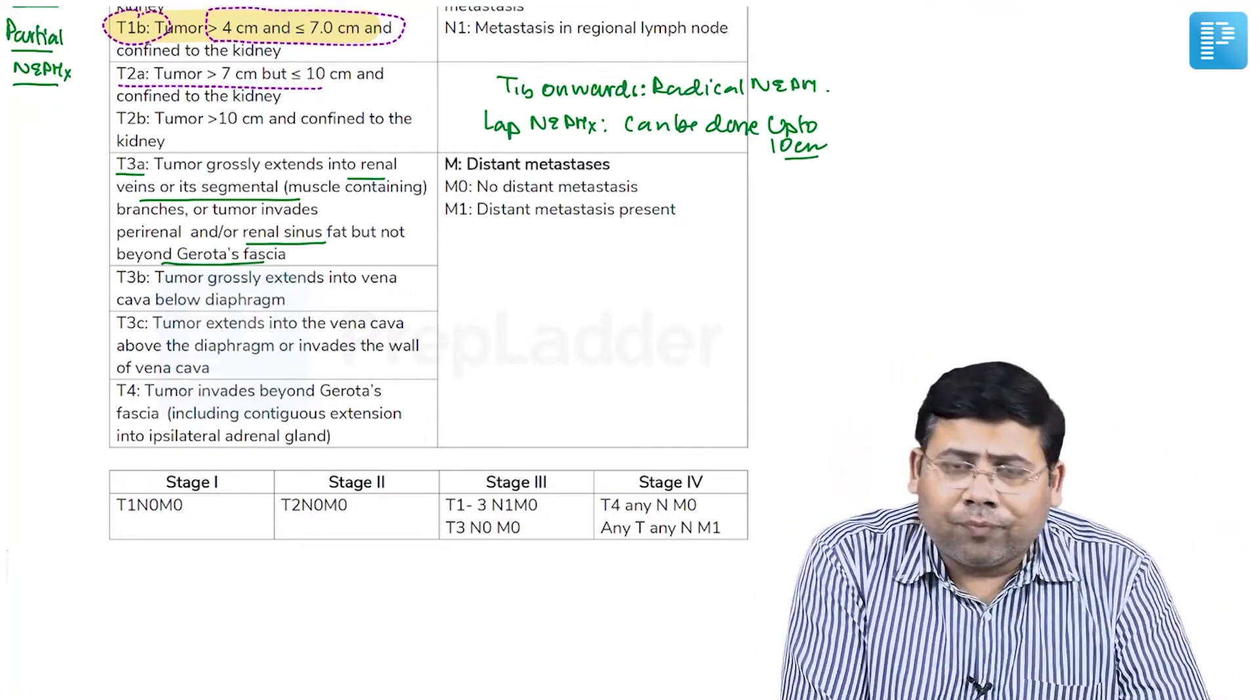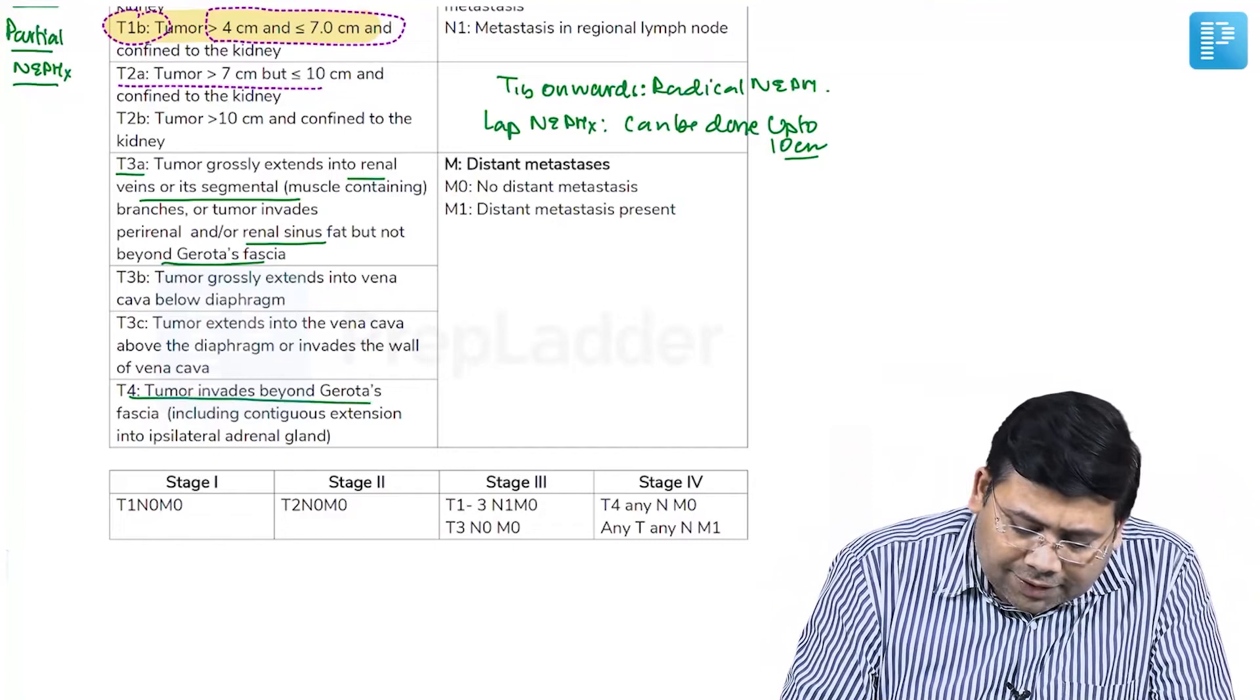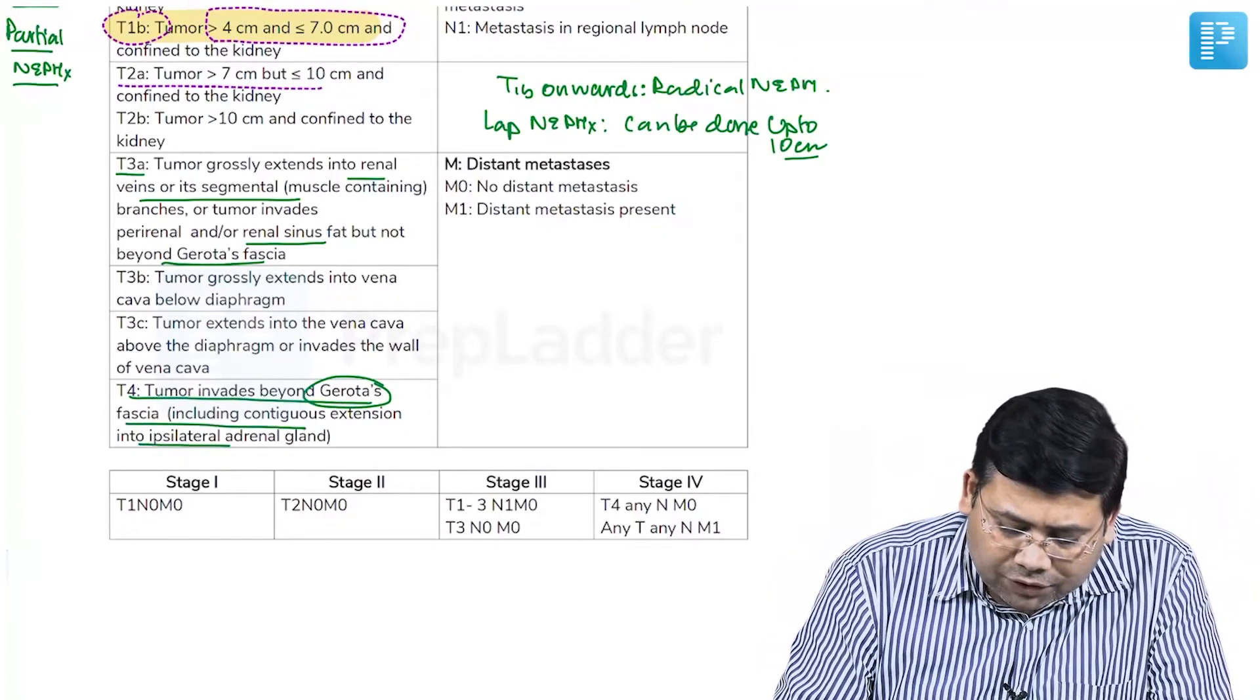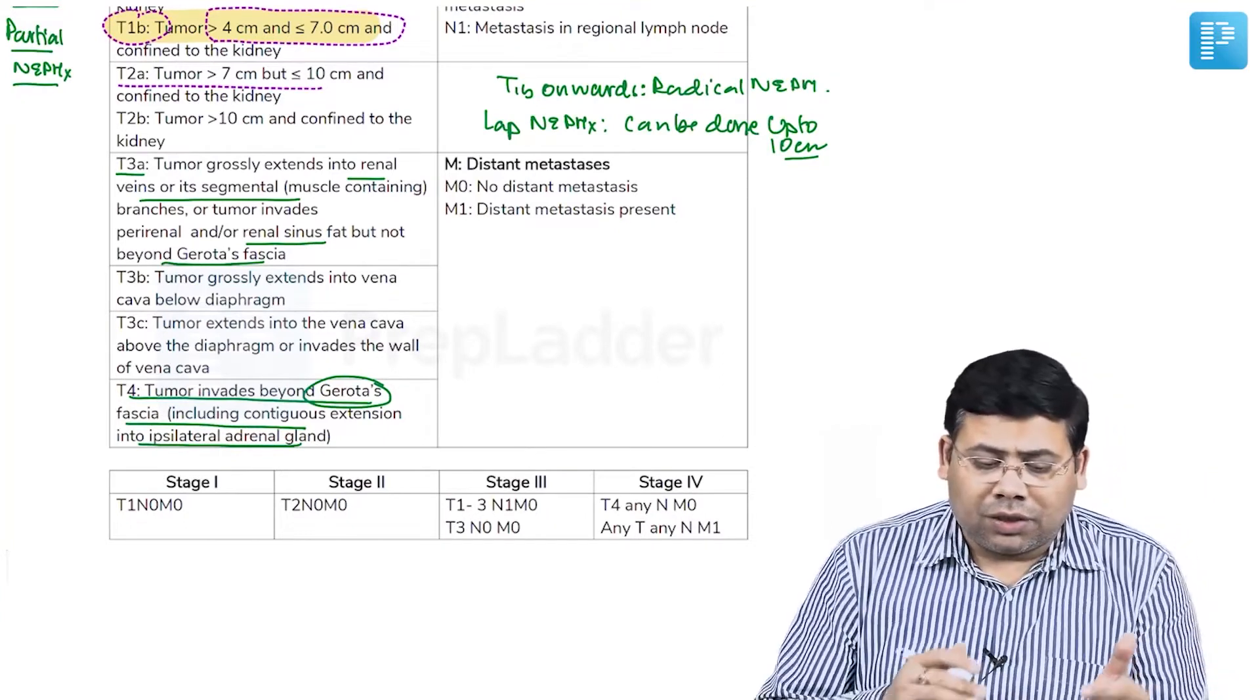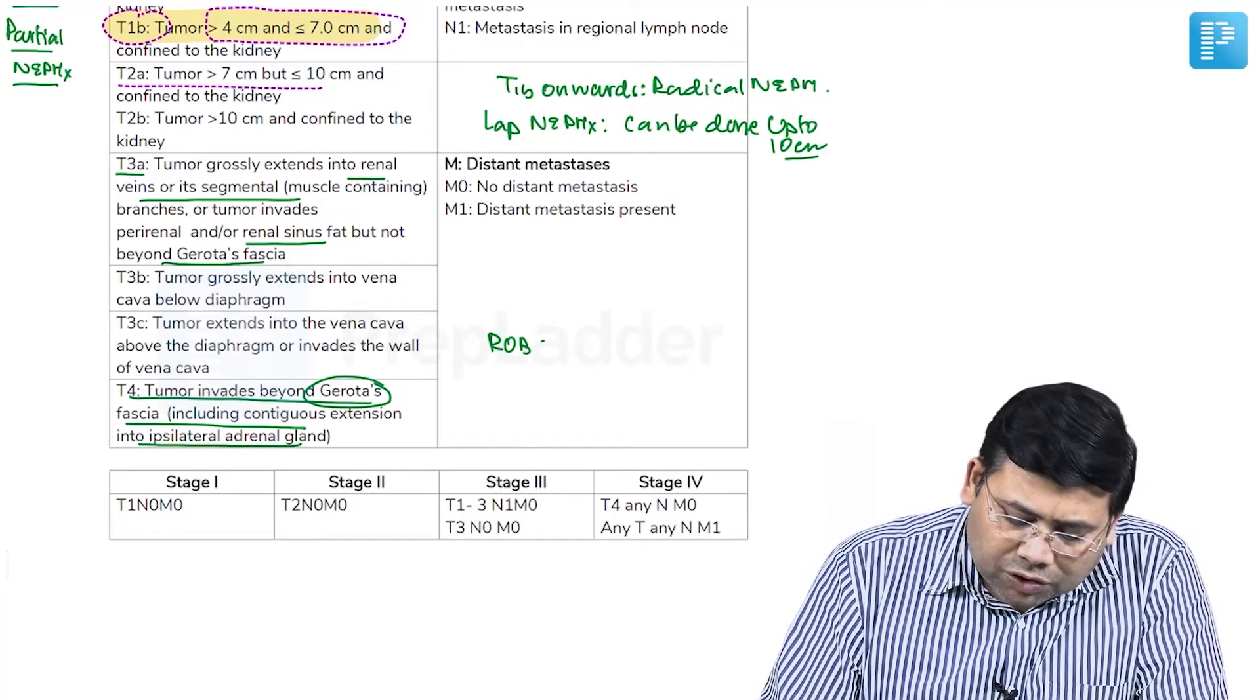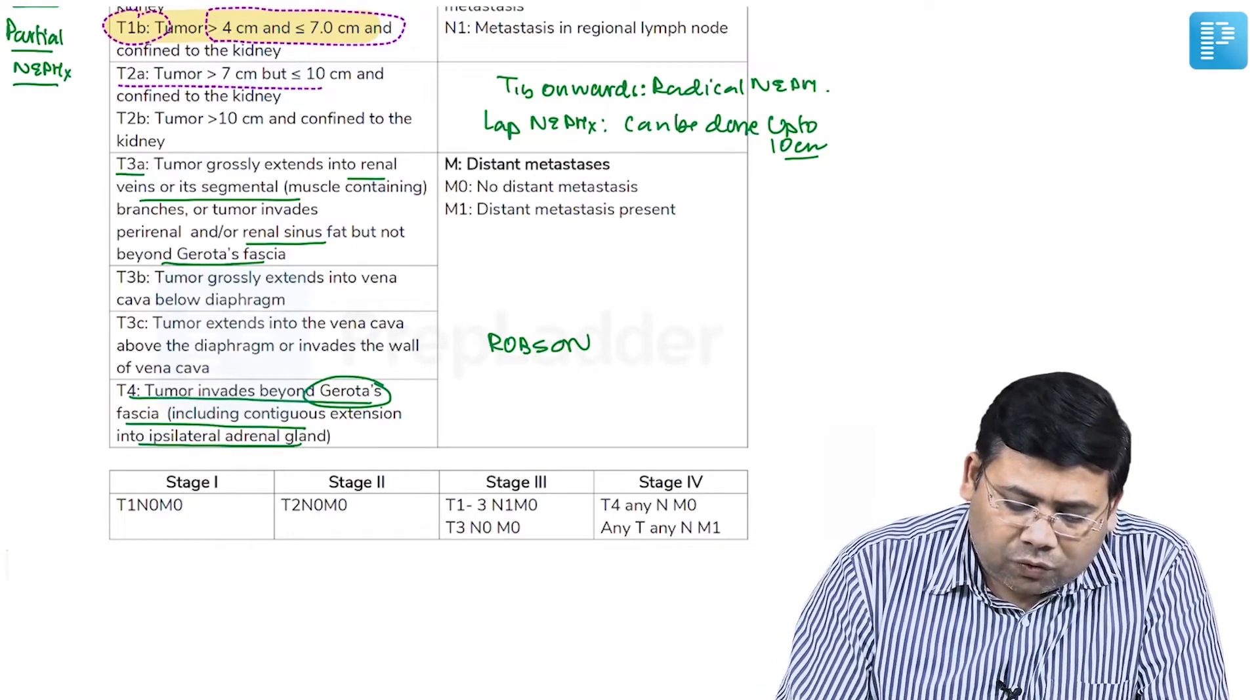Then T4—this is ipsilateral Gerota's fascia or ipsilateral adrenal gland. This is the classical staging. The older name was Robson staging, which is no more in use.